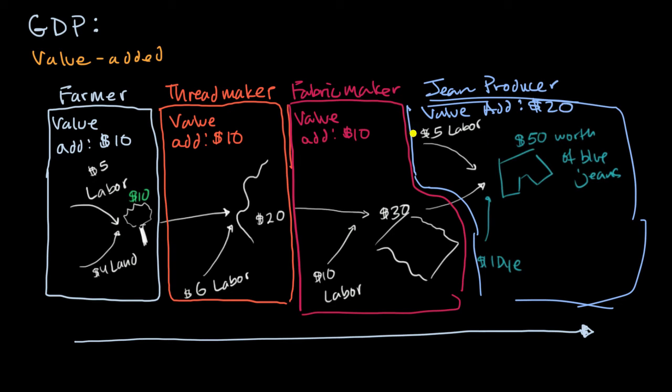And so the value-added approach to GDP will just sum up these value adds. So this is going to be $10 from the farmer plus $10 from the thread maker, plus $10 from the fabric maker, plus $20 from the jean maker. And what will that all add up to? Well, that's all going to add up to 10 plus 10 is 20, plus 10 is 30, plus 20 is $50.